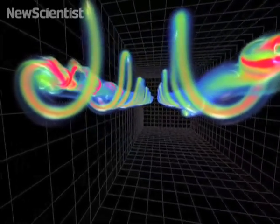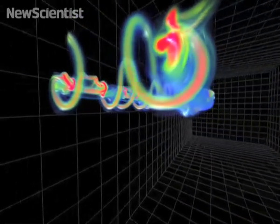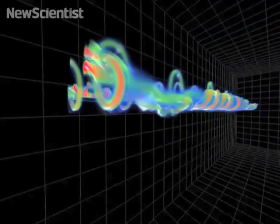So far, Petros Komoutsakos and his team at ETH Zurich have been modeling two different kinds of vortices.